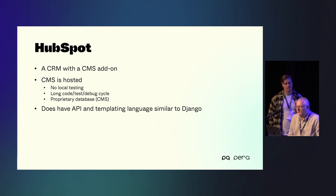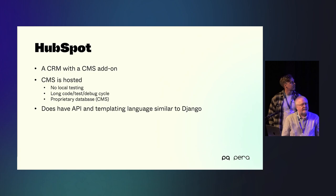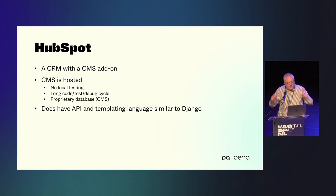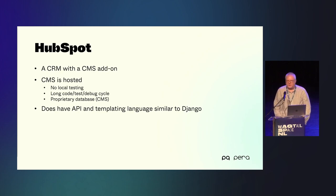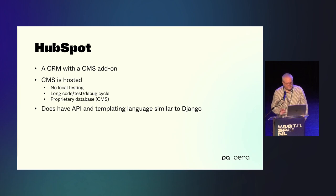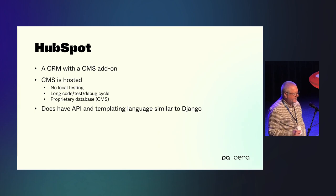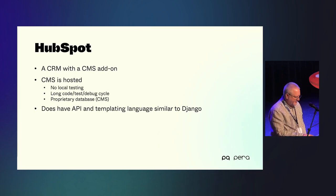HubSpot is a CRM with a CMS bolted onto it. The problem with the CMS is that it's a hosted CMS, so if you're developing for it there's no local testing — it's a very long code-debug cycle. It has a proprietary CMS database, though it does have an API, and a templating language similar to Django's.